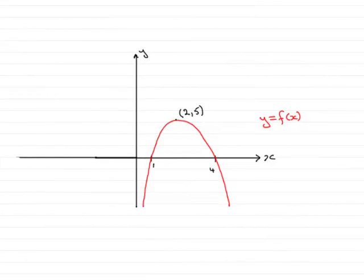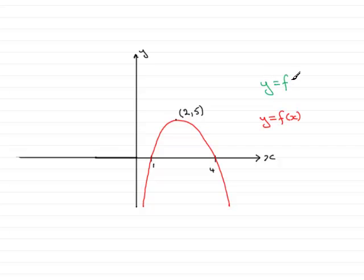Now in this part of the question, we're given y equals f of x, passing through 1 and 4 on the x-axis and having a maximum point at (2, 5), and we're asked to sketch y equals f of negative x.